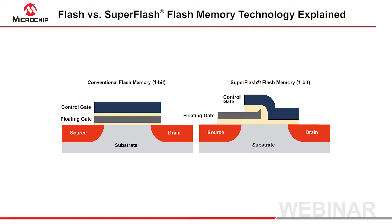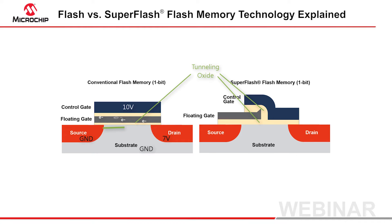For conventional flash, the control gate is raised to a high programming voltage — let's use 10 volts. The source and substrate are grounded and the drain is biased up, let's use 7 volts. This turns the transistor on and electrons flow from the source to the drain. Some percent of these electrons are hot enough to jump across this tunneling oxide and get trapped on the floating gate.